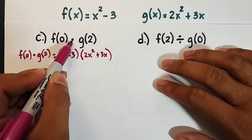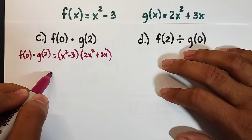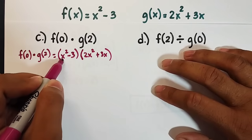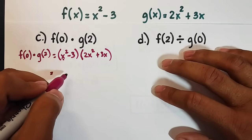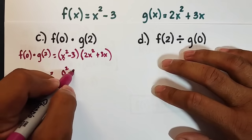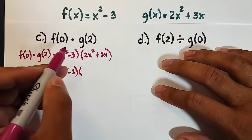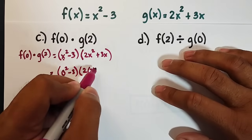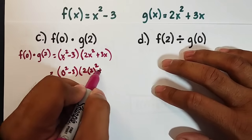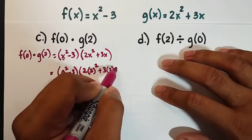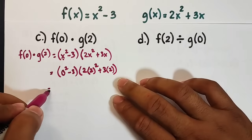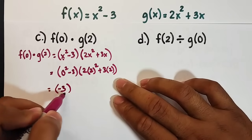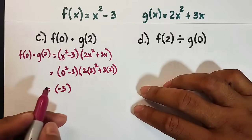So we have (x² - 3) times (2x² + 3x). Your input here in the function f is 0. So it will become 0² - 3. Here, g of 2, your input is 2. We have 2(2²), we're replacing x by 2, plus 3 times 2. Simplify: 0² is 0 minus 3, it will remain negative 3. So we have negative 3 on the first parenthesis.